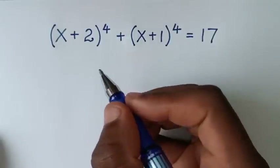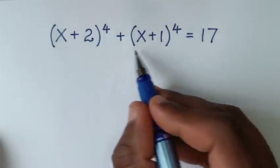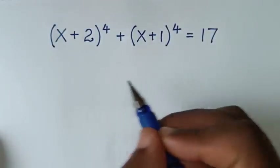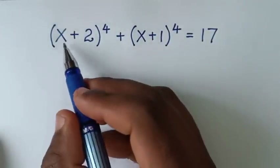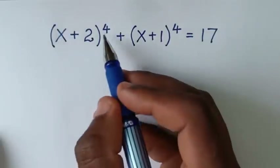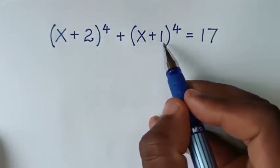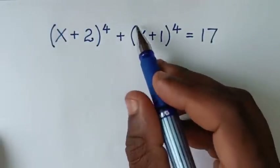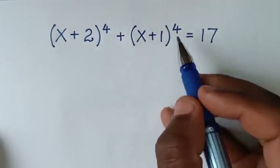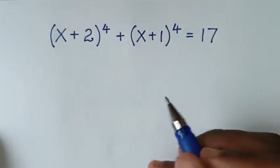Hello, you are welcome to solve this math problem, which is (x+2)⁴ + (x+1)⁴ = 17.